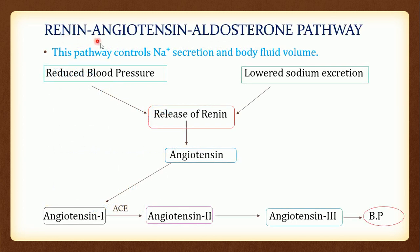There is one pathway related to blood pressure — that is the renin-angiotensin-aldosterone pathway. This pathway controls sodium secretion and body fluid volume. When blood pressure is reduced and sodium excretion is low, the release of renin occurs in our body. This is a natural mechanism, and if this pathway is not in a normal condition, we can see BP fluctuations.